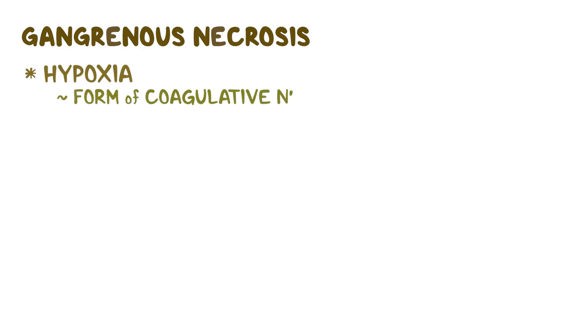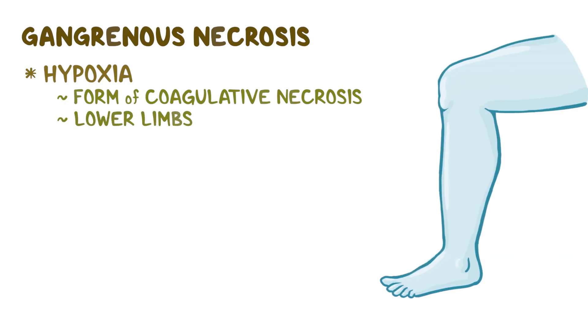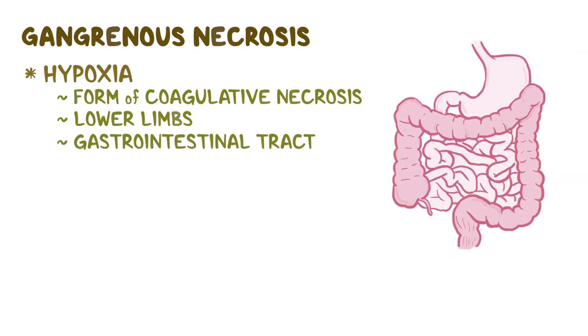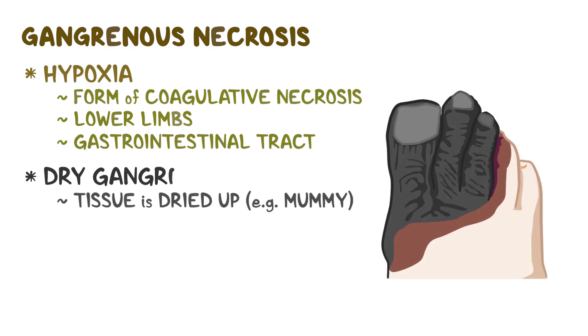Next, there's gangrenous necrosis, and it also occurs due to hypoxia. So that's why some consider it a form of coagulative necrosis. Gangrenous necrosis typically affects the lower limbs and gastrointestinal tract, and it causes the tissue to get dried up like a mummy, sometimes called dry gangrene.